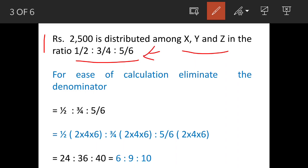So what we'll do is eliminate the denominators. We can eliminate denominators by taking the LCM and multiplying it with the ratio. But if you're short on time, you can multiply the ratios with the product of the denominators—that is, 2 × 4 × 6.